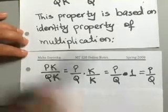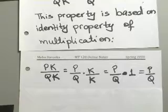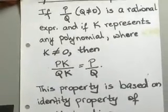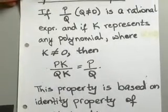So p over q times 1 is the same thing as p over q. That's the identity property of multiplication, and that is what your fundamental property is based on. And this is the property we are going to use here to help us write rational expressions in lowest terms.